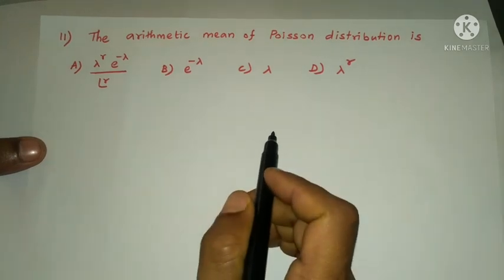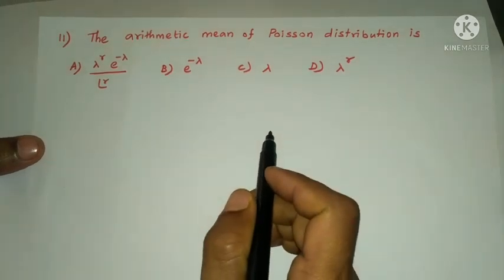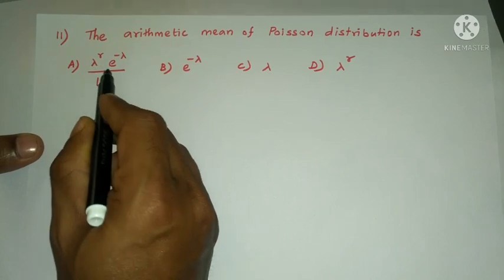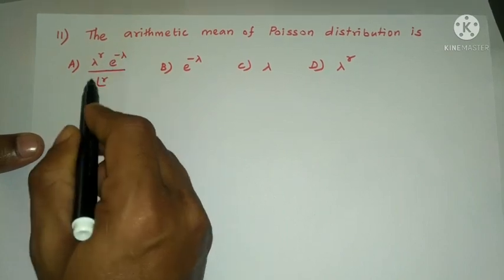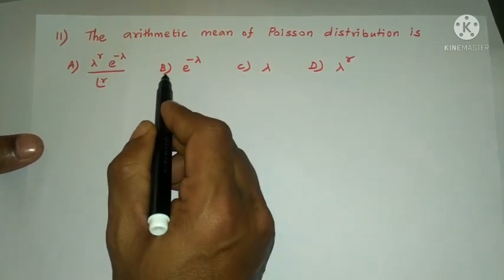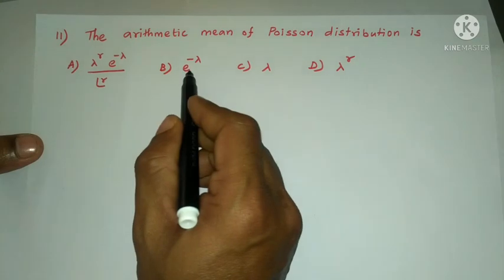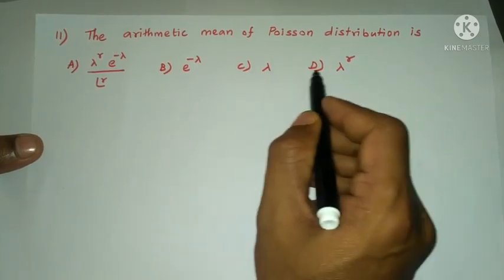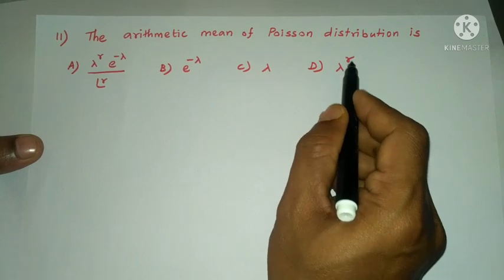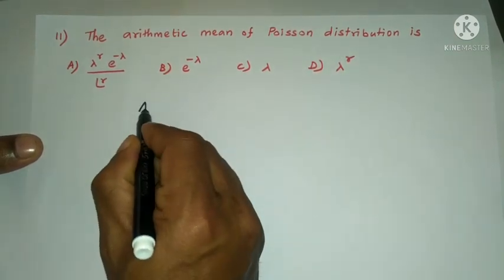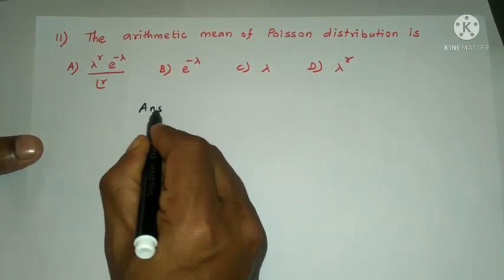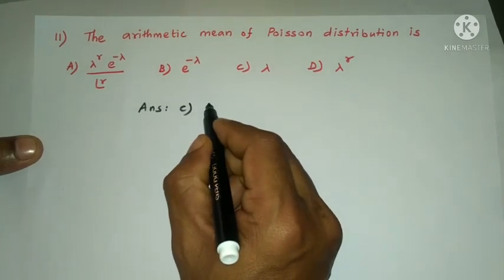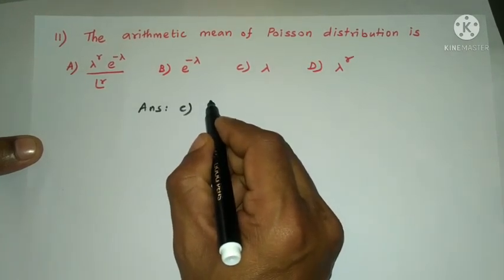Next question: the arithmetic mean of the Poisson distribution is — option A: lambda^R × e^(−lambda) / R factorial, option B: e^(−lambda), option C: lambda, option D: lambda^R. The answer is option C: lambda.